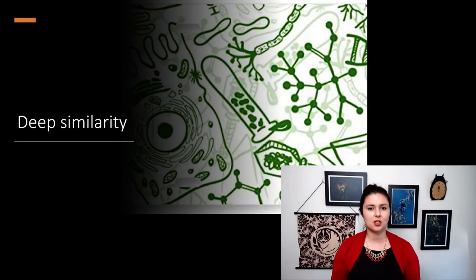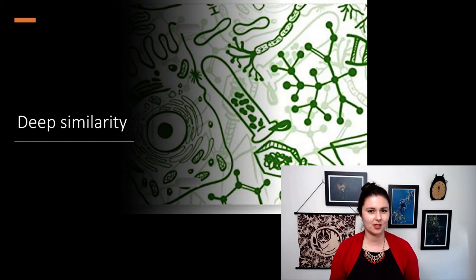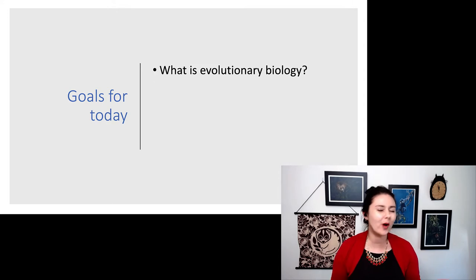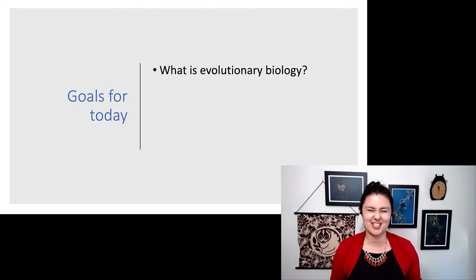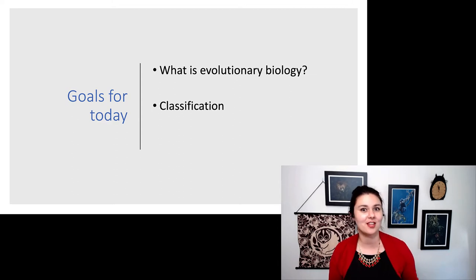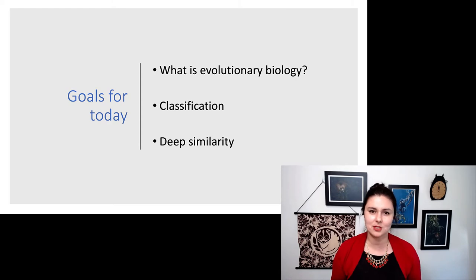When we're talking about evolution, one of the words that comes up is called deep similarity. So to talk about deep similarity, we're first going to talk about what is evolutionary biology, because now we're entering a very specific field with a really deep history. Next, we'll talk a little bit about classification and how we understand how different things are related to each other. And lastly, we'll come back to this idea of deep similarity and why we're bringing it up now.